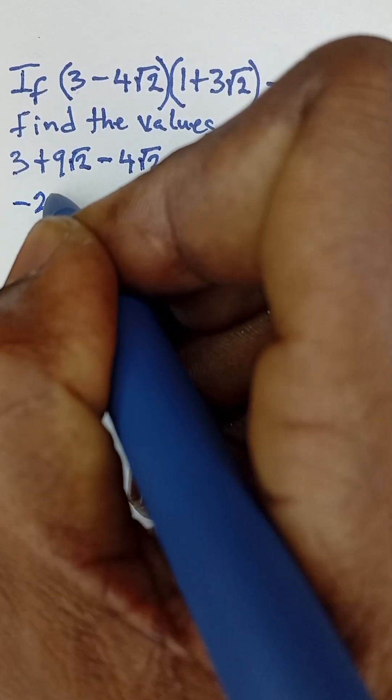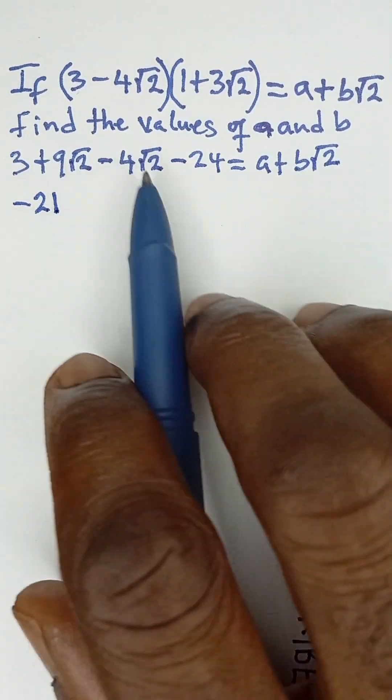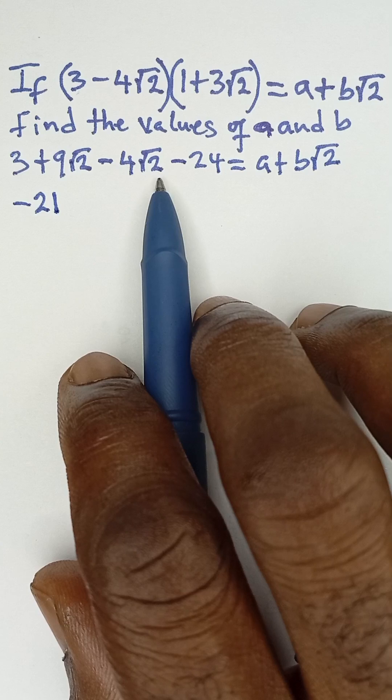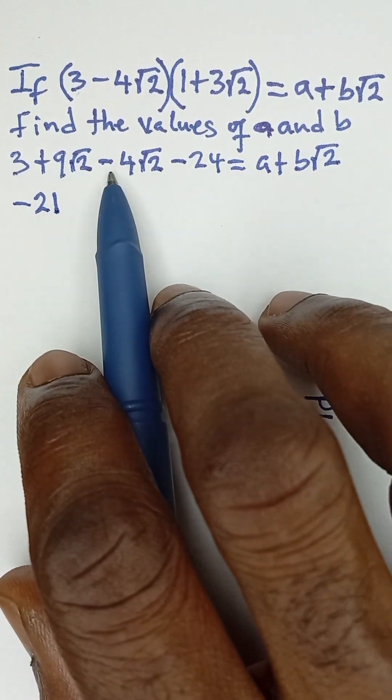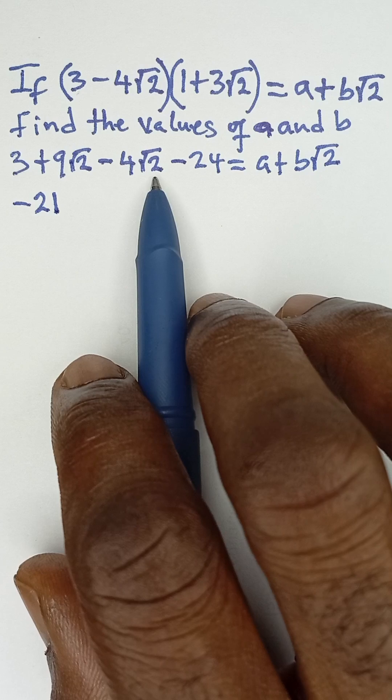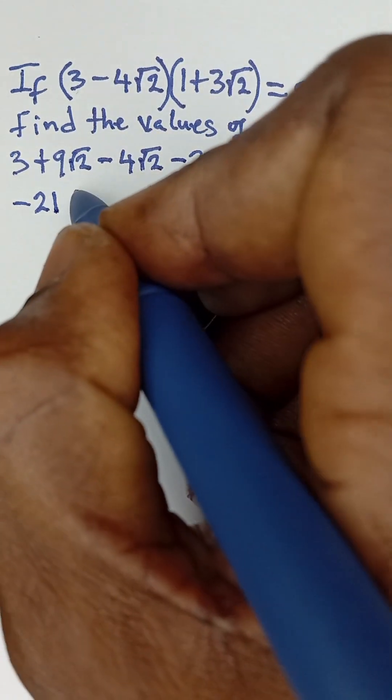And then 9√2 and -4√2 are also like terms because of the √2 that they have. So 9√2 minus 4√2 will give us positive 5√2, so plus 5√2. And that is equal to what we have on the right-hand side, which is a + b√2.